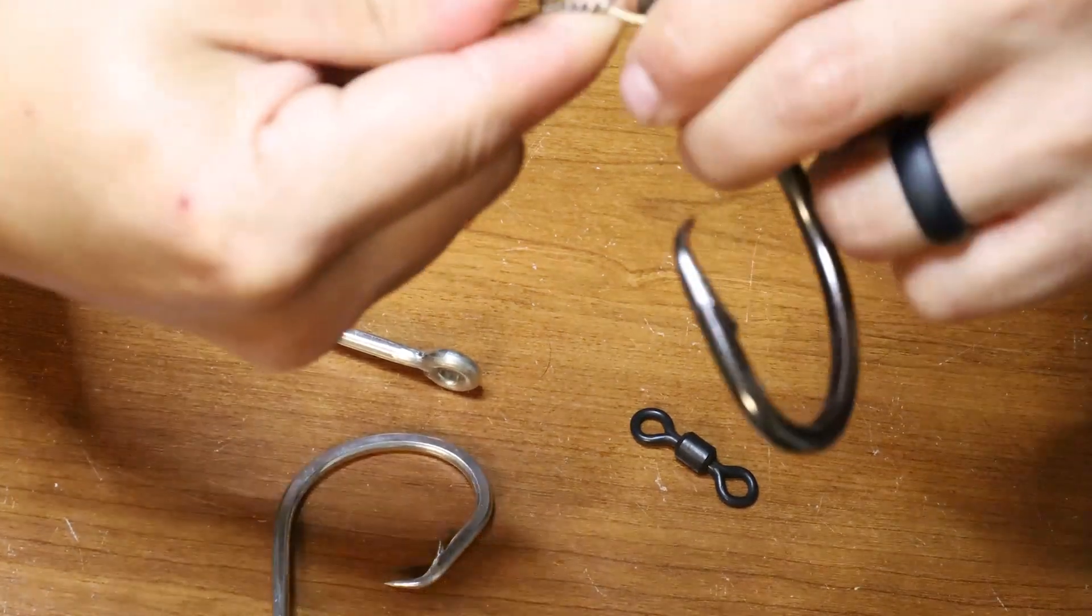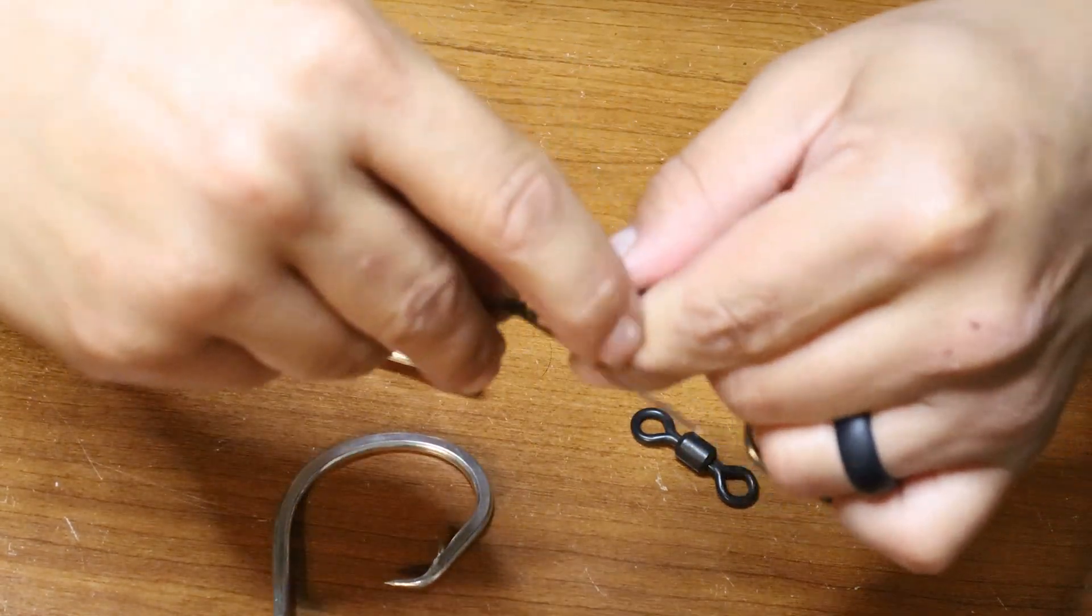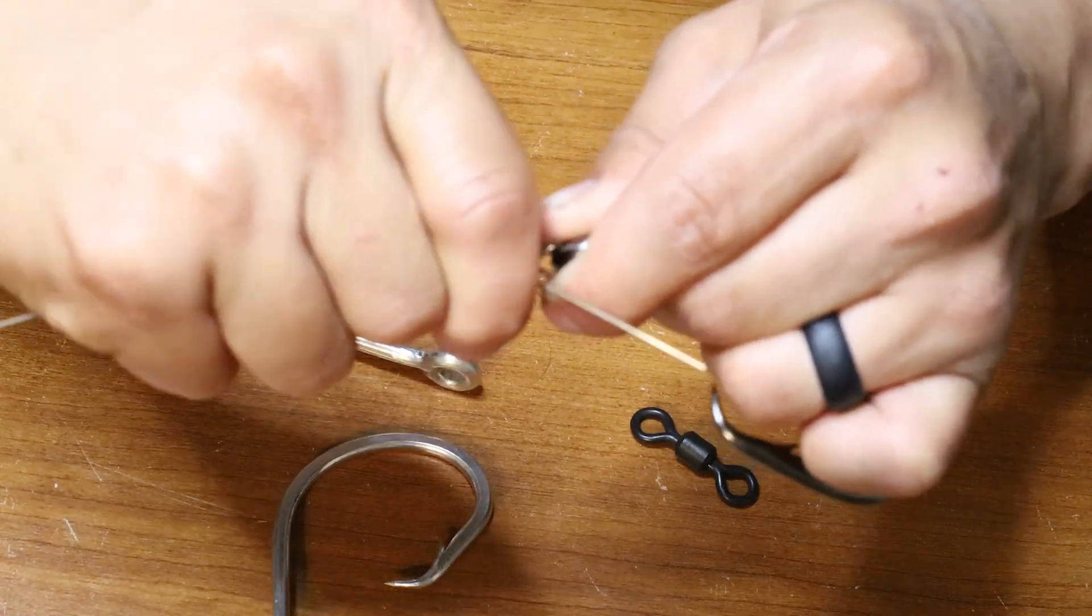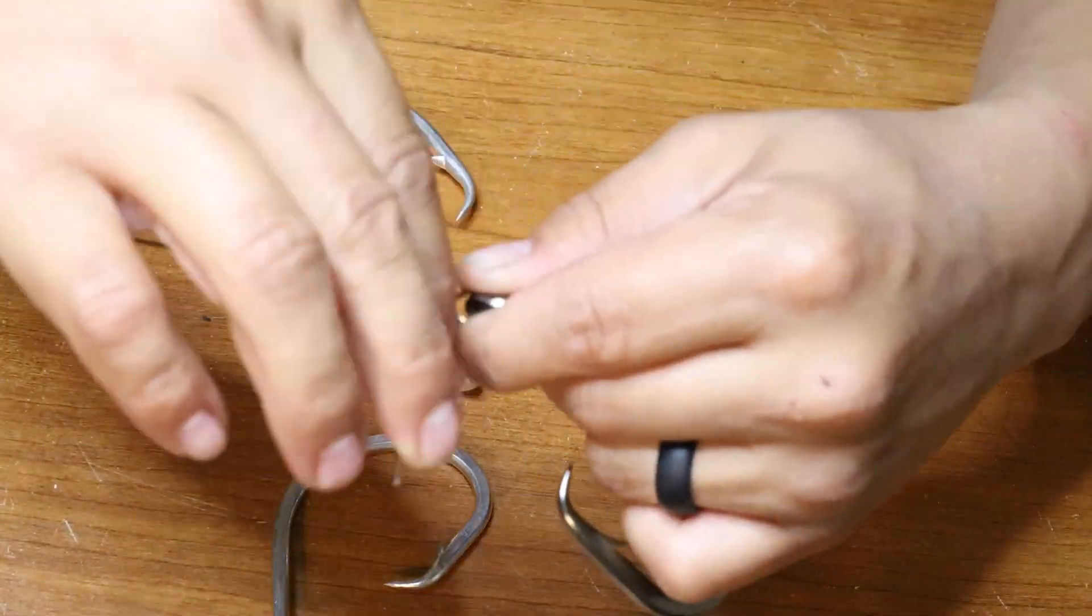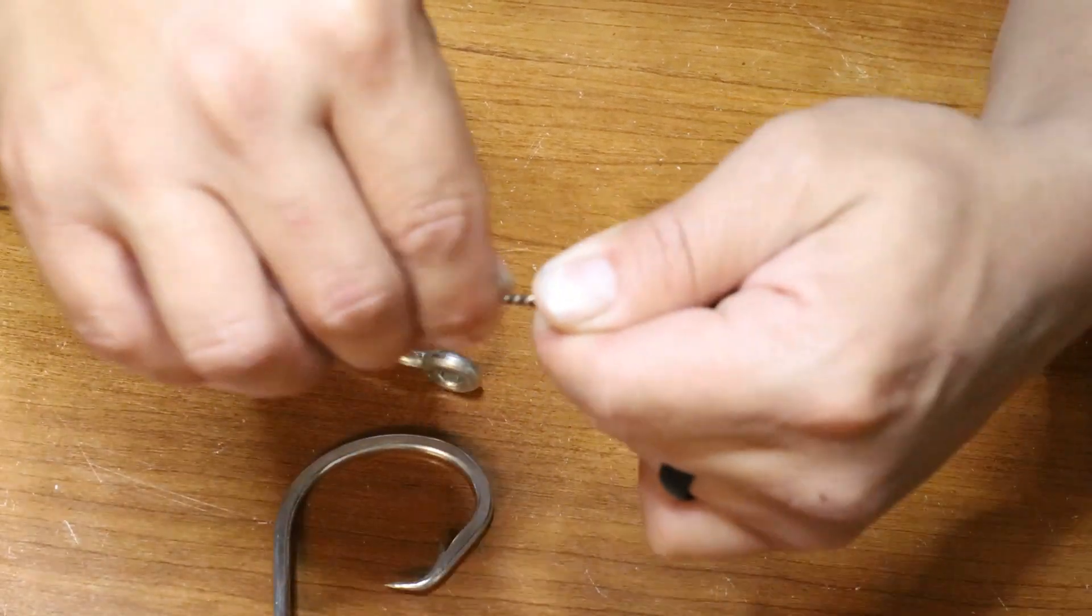So what I like to do is take it, pin it straight down like this, and bend it back up and straight down and back up, and it pops off just like that. Now you don't have a burr, nothing.